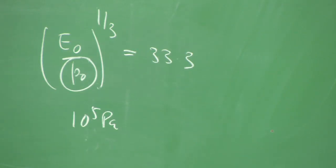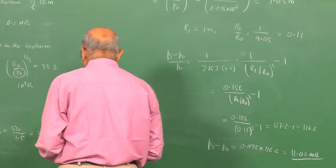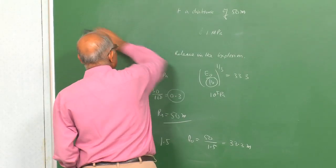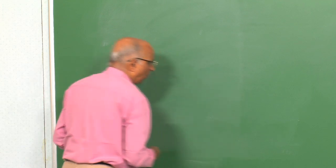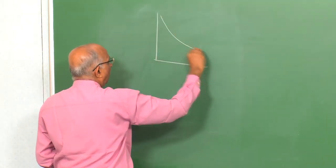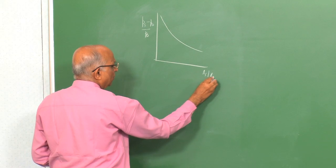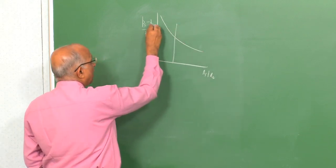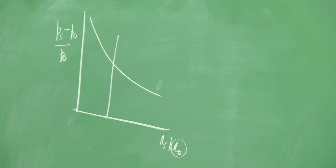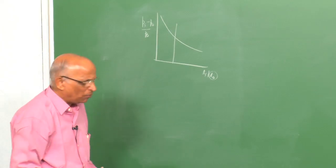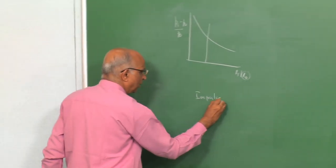In summary, we started with a strong blast assumption, extended it to lower Mach numbers using the composite curve, and used it to predict overpressures as a function of Rs/R0. This allows us to both predict damage at a given distance and back-calculate the energy release from a measured overpressure. Let me now briefly introduce impulses, which we will continue in the next class.